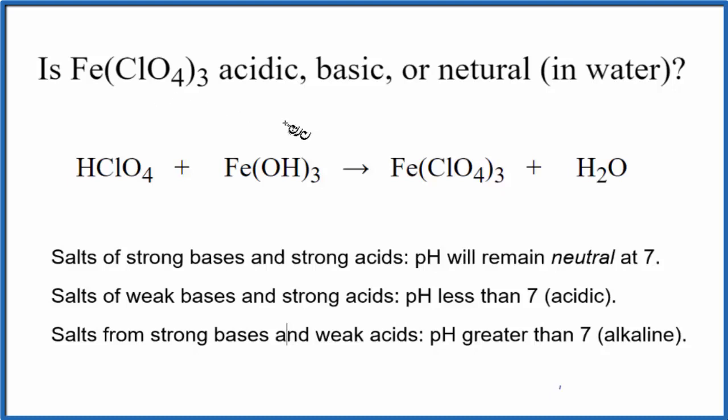To figure that out, we need to know the neutralization reaction that produces the iron 3 perchlorate. So we have our perchloric acid and our iron 3 hydroxide. They neutralize. We get a salt here, the FeClO4-3 and water. That's our neutralization reaction.